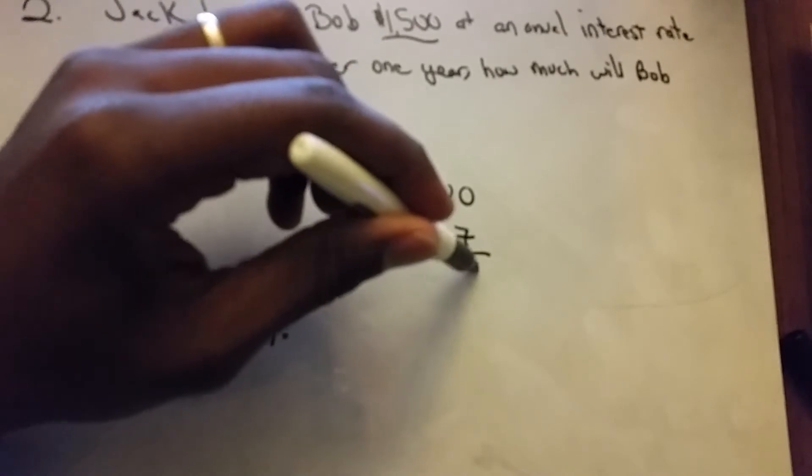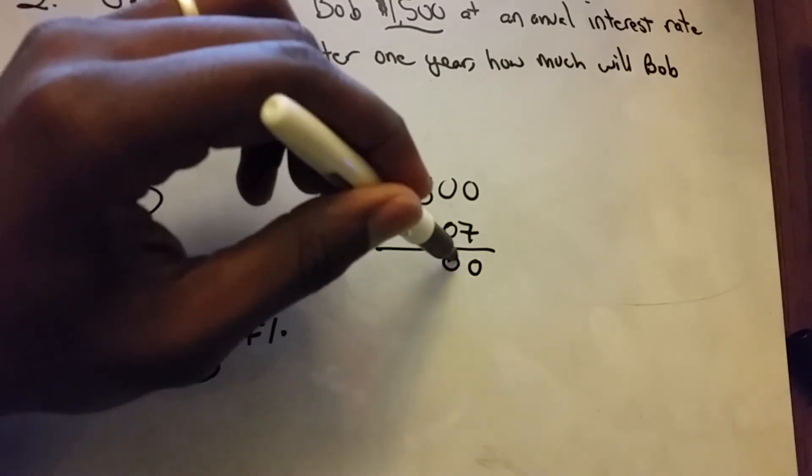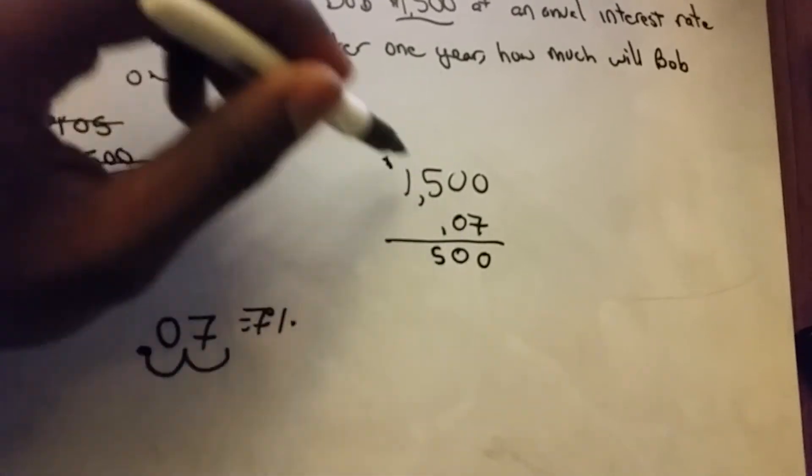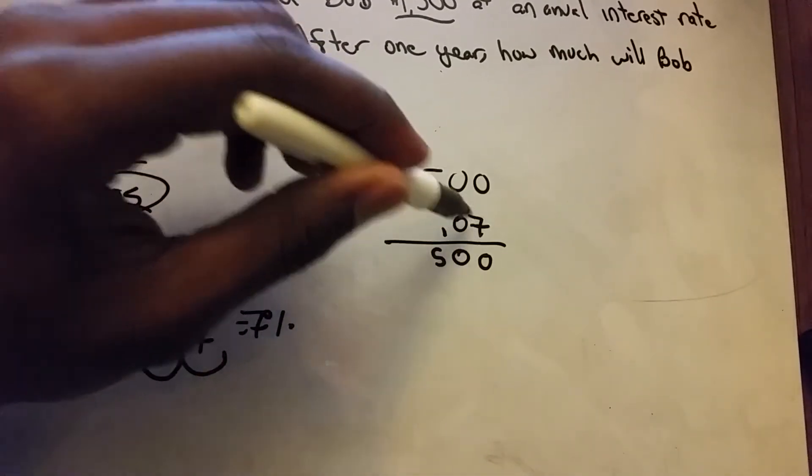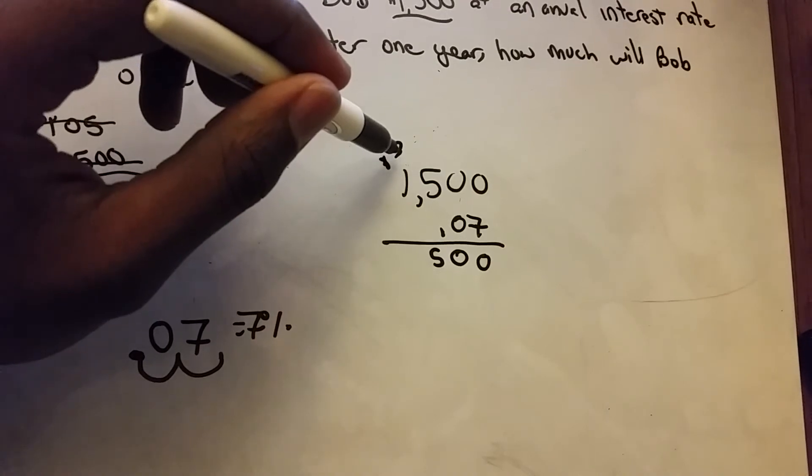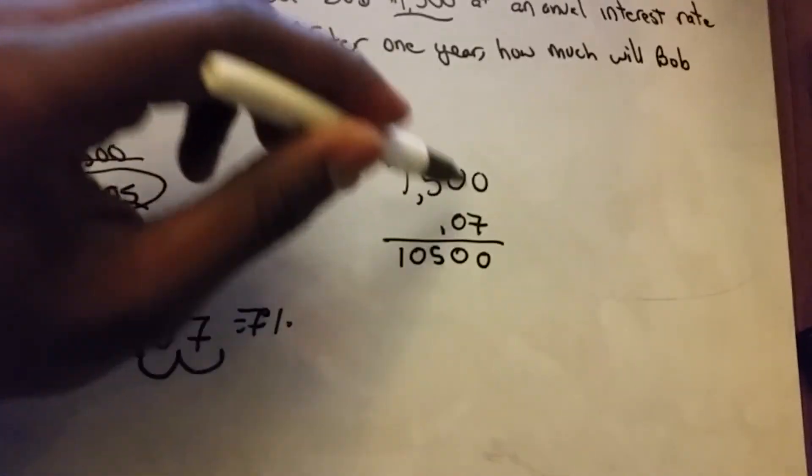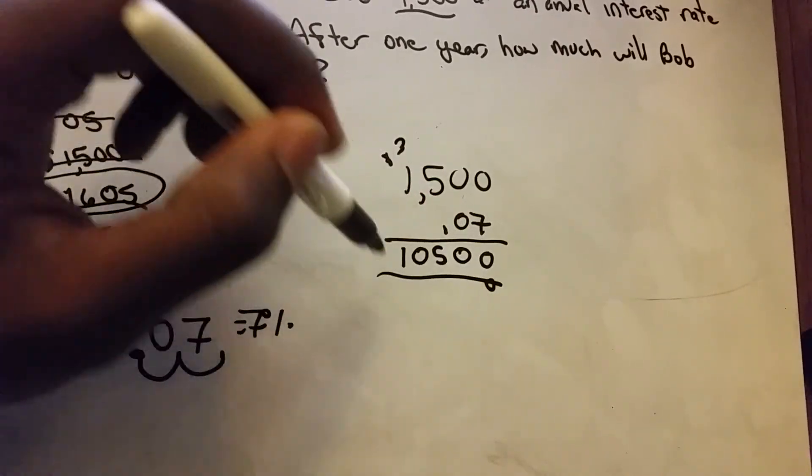7 times 0 is 0, 7 times 0 is 0, 7 times 5 is 35, carry the 3. 7 times 1 is 7, plus the 3 is 10. And you have the 0 here, so you don't really have to do anything for that.